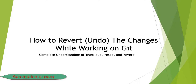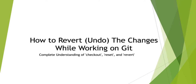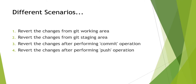Hey guys, Suresh here. Welcome back to Automation Elon. This is Part 2 of our discussion on how to revert changes while working with Git. In Part 1, we saw how to revert changes from the Git working area. In this part, I'm going to discuss how to revert changes from the staging area. I strongly recommend watching Part 1 before moving ahead, as I've explained many basic things there.